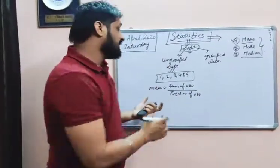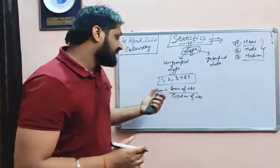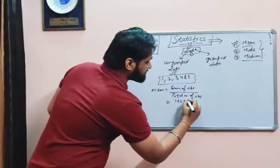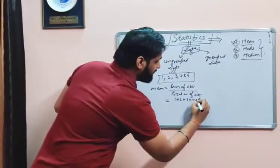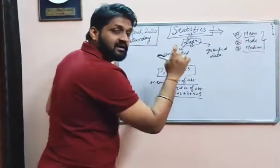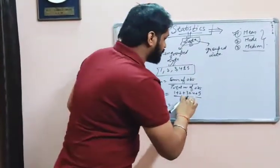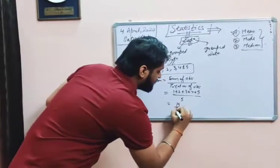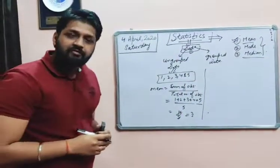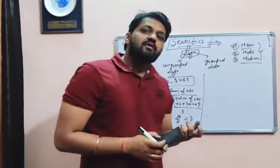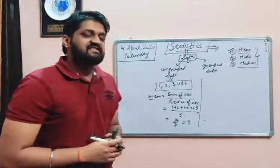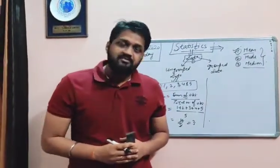Here it is ungrouped data — the individual data we are getting. So the sum of observations is 1 + 2 + 3 + 4 + 5, divided by the total number of observations, which is 5. That gives us 15 divided by 5, so the mean is 3. So in the case of ungrouped data, we have individual observations and we find the mean by the formula: sum of observations divided by total number of observations.